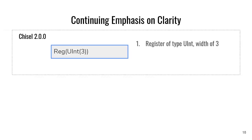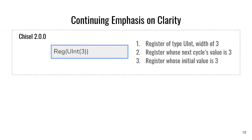Hopefully it's not too early — everyone can think, you took your coffee? Because there's another option: it could be a register whose next cycle's value is 3, where the parentheses indicate it's passing in a literal 3 and always registering that value. Or it could be a register whose initial value is 3. So raise your hand if you think it's number 1 — okay, maybe half the people. Number 2? Number 3 — a lot of people. You can see how it's confusing. Well, in reality, I tricked you — you're all wrong.